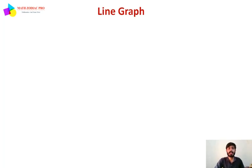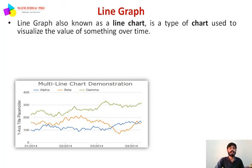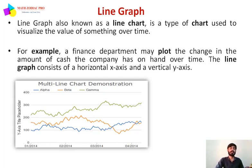Next is the line graph, also called a line chart. It is a type of chart used to visualize the value of something over time. For example, the finance department may plot the change in the amount of cash the company has on hand over time. The line graph consists of a horizontal x-axis and a vertical y-axis.